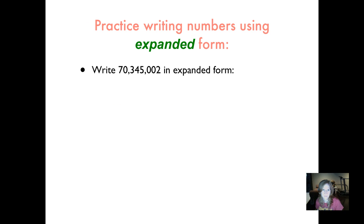Let's do some practice now. Let's write 70,345,002 in expanded form. Were you listening to see if I used the word and when I read that? Keep listening to make sure you're checking. Okay. Let's see if you wrote this in your journal. Did you write 70 million plus 300,000 plus 40,000 plus 5,000 plus 2? If you didn't, check back and see where you made your mistake and try that again.